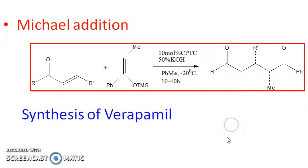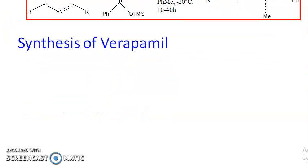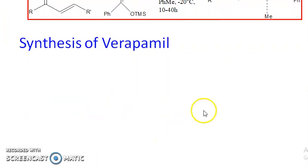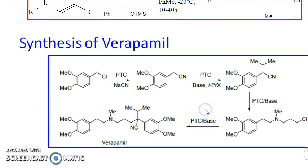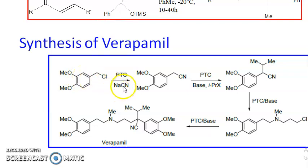Another example is the synthesis of verapamil, a natural product. In the synthesis of verapamil, almost every step uses PTC. You need to carry out the reaction between sodium cyanide and an aromatic aryl compound. Since sodium cyanide is not soluble in organic solvent, you take the help of PTC to introduce the cyanide group.